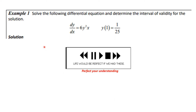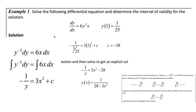Okay, let's wade right into it. Here's example one: solve the differential equation dy/dx = 6y²x with initial condition y(1) = 1/25. To separate variables, we multiply both sides by dx and then divide both sides by y². After doing that, we have y⁻² dy = 6x dx. We have now separated variables, so we integrate both sides.